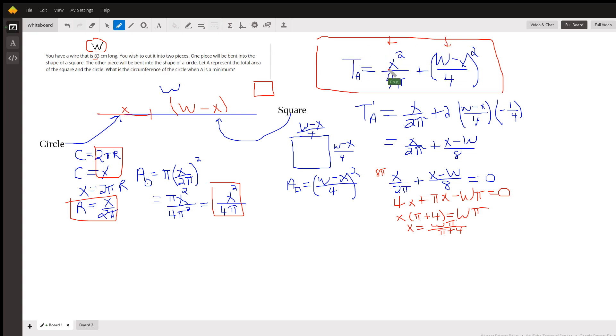If I can find the first derivative of that function, I could set that derivative equal to zero, find the critical numbers, I might be able to prove that that critical number generates a minimum value for the area.